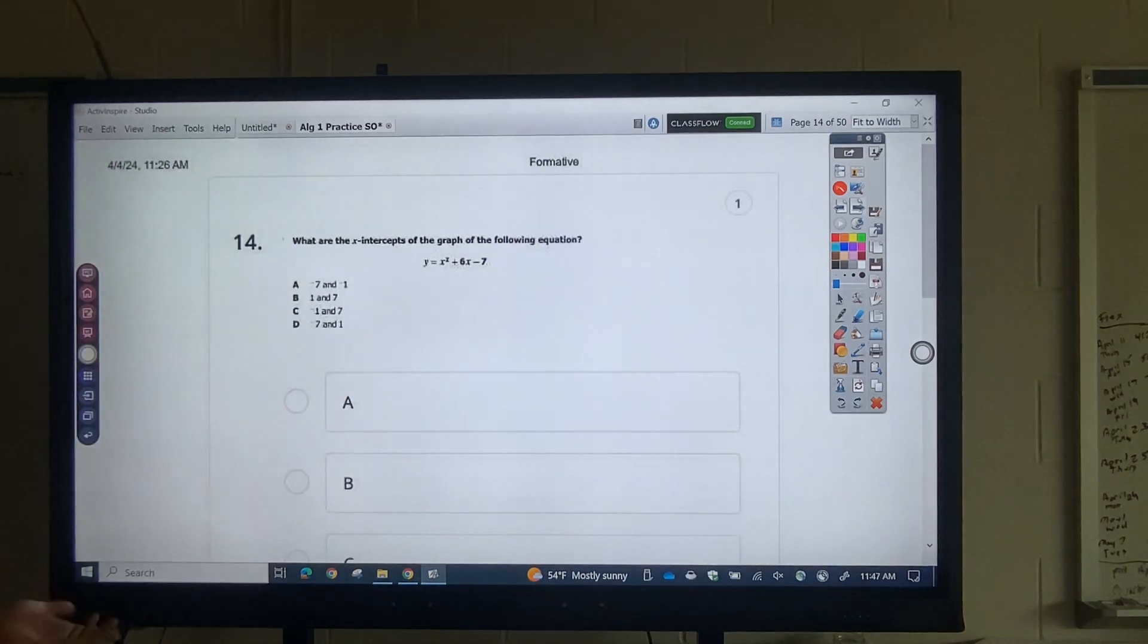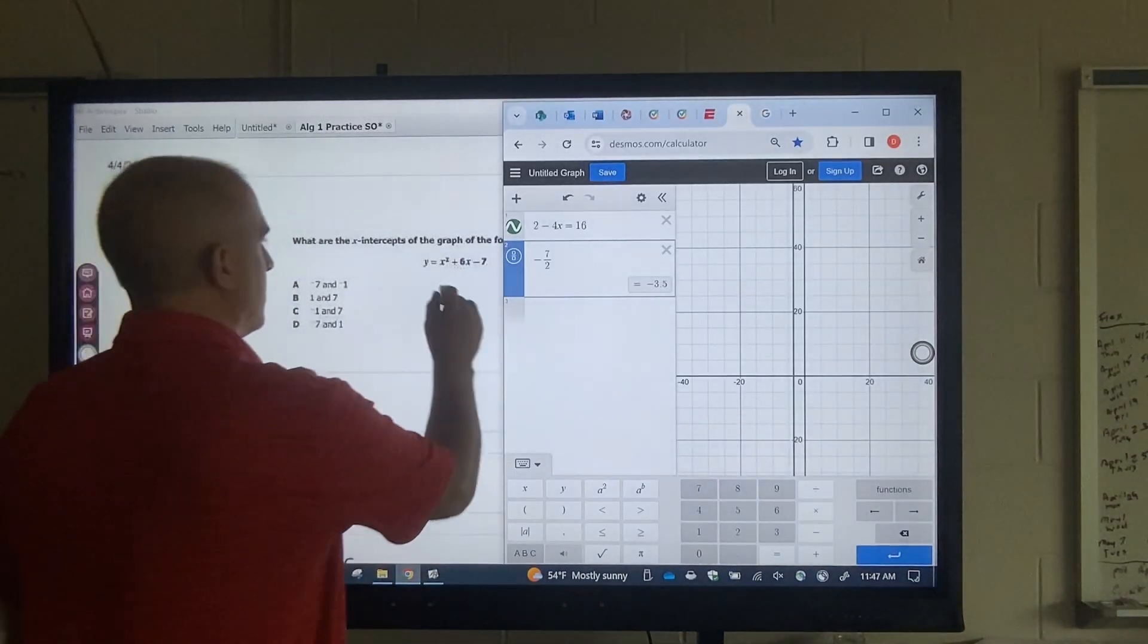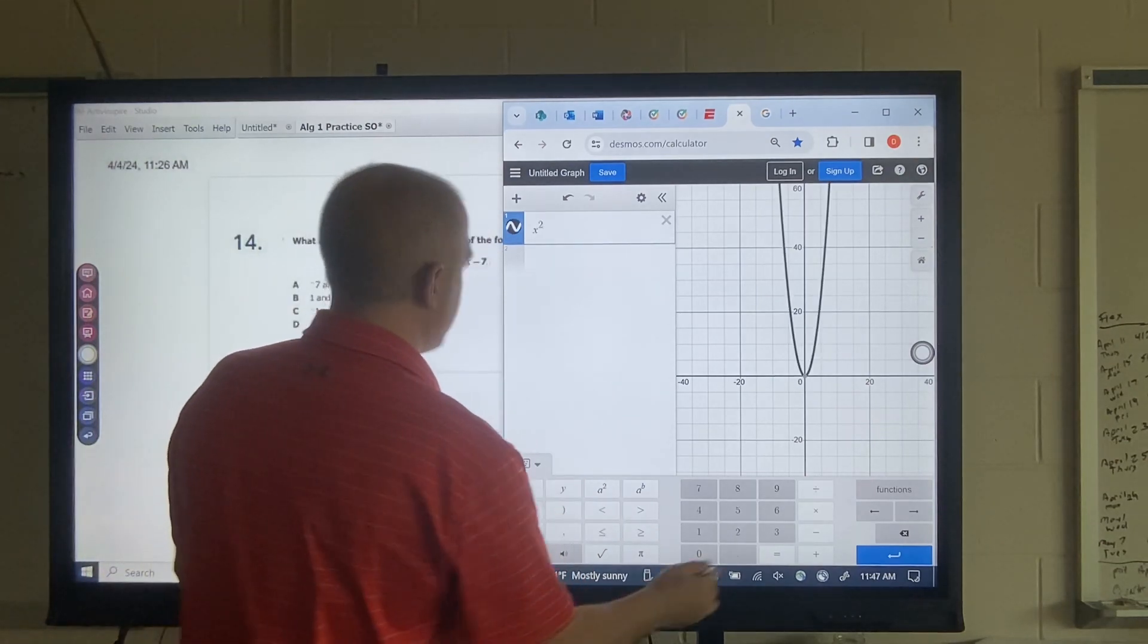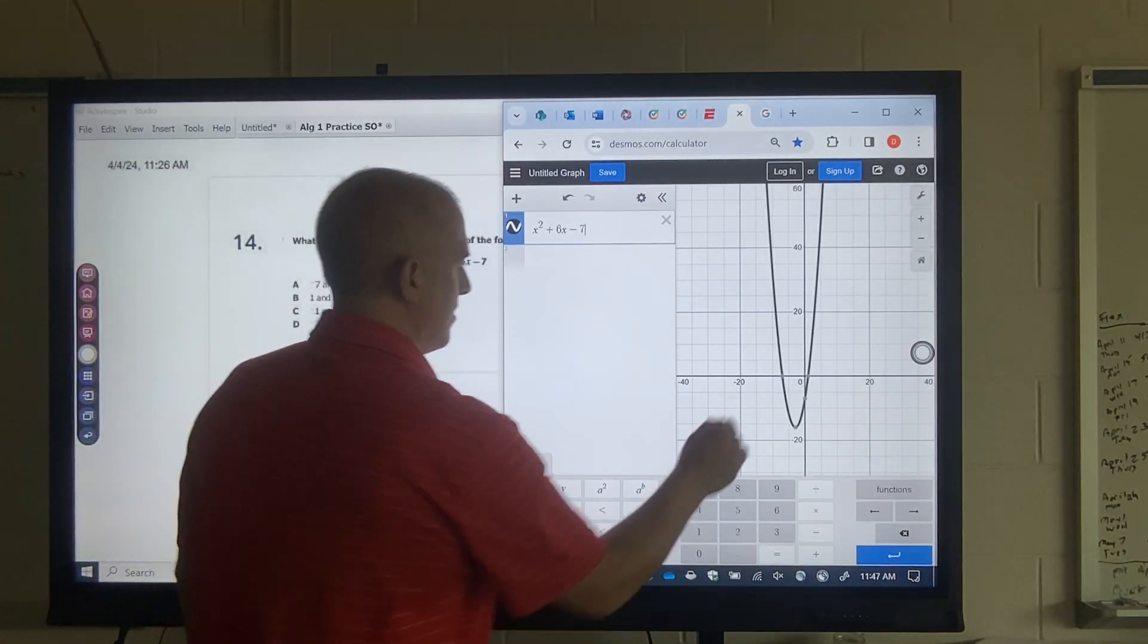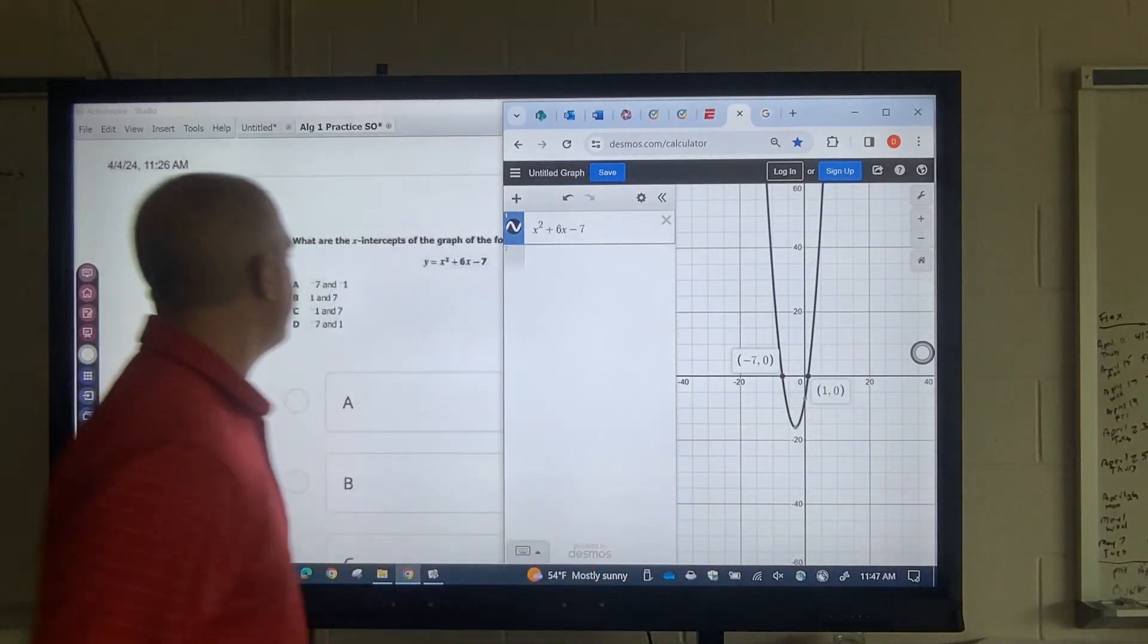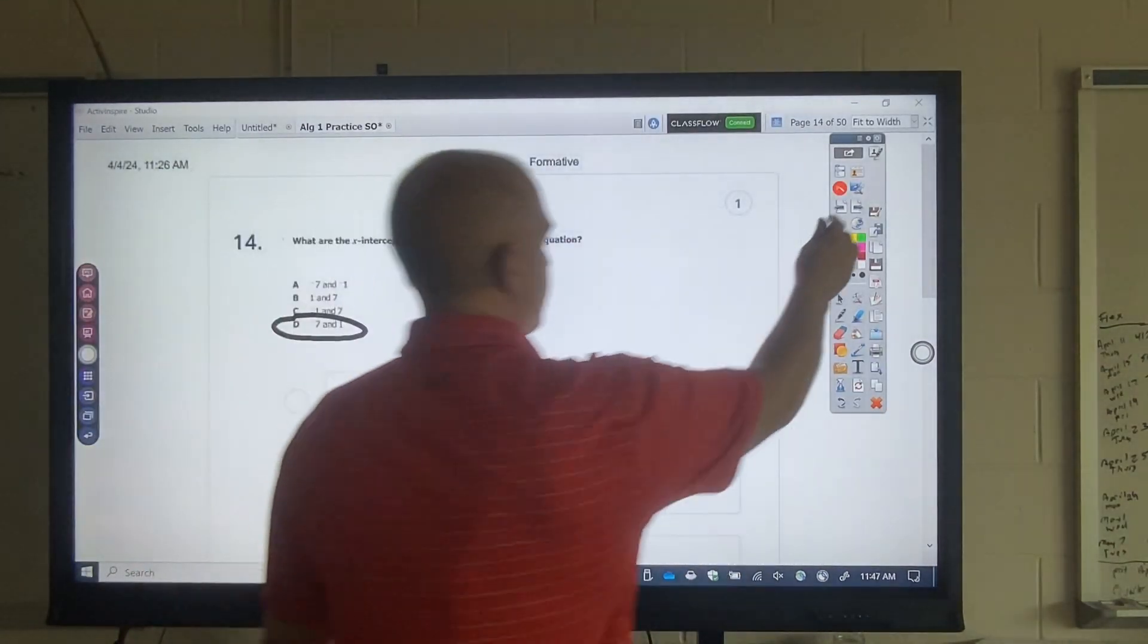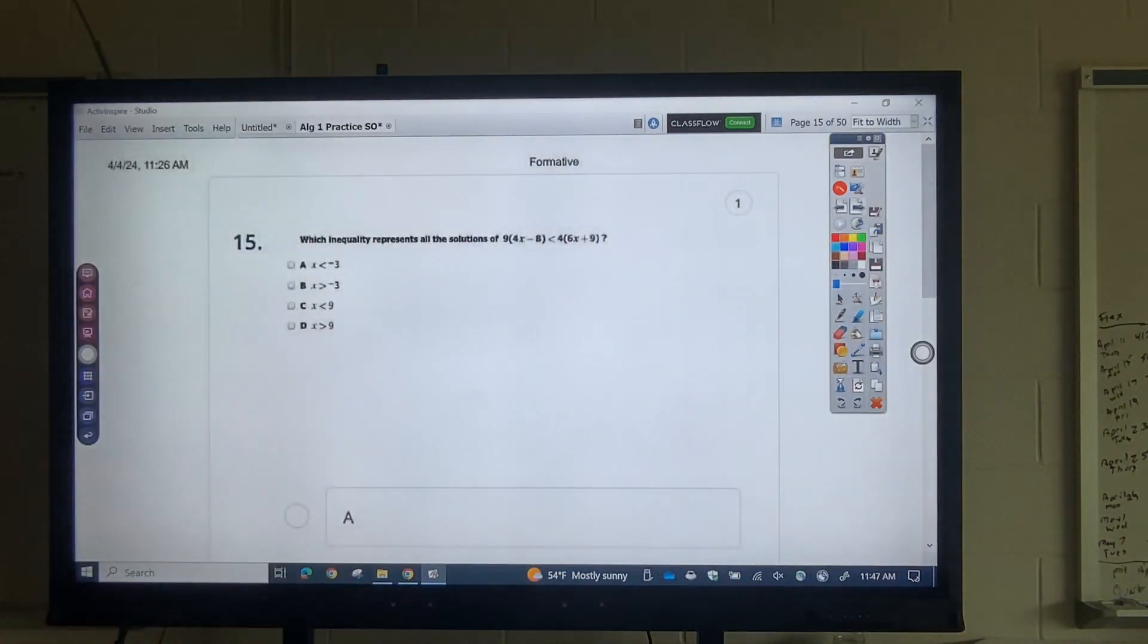What are the x-intercepts? Same question. All right. You can put the y equals. You really don't need to. I put x squared plus 6x minus 7. Okay. That's negative 7 and 1. Negative 7 and 1. Okay. So as you notice, there's no pencil needed for this. Okay.